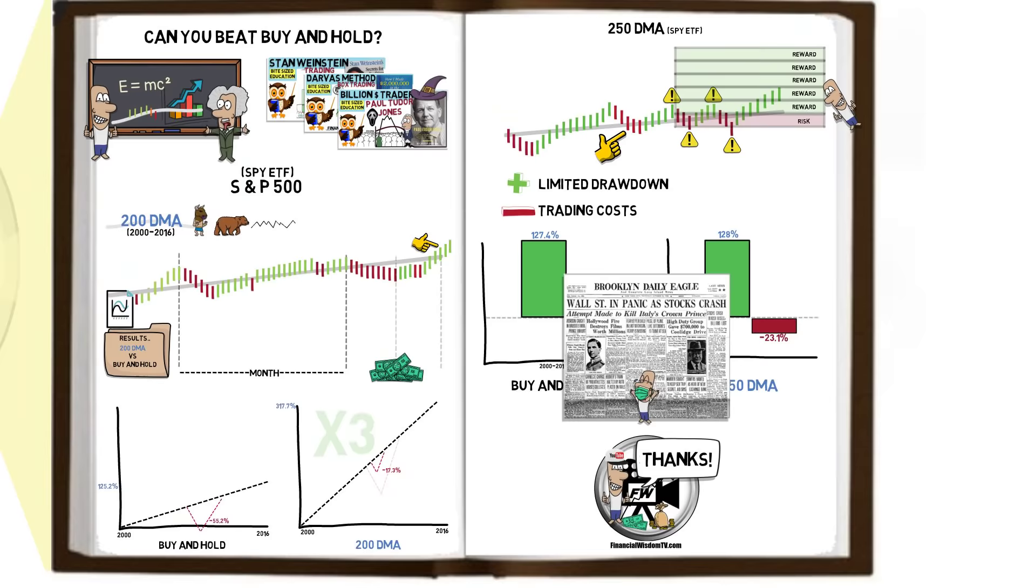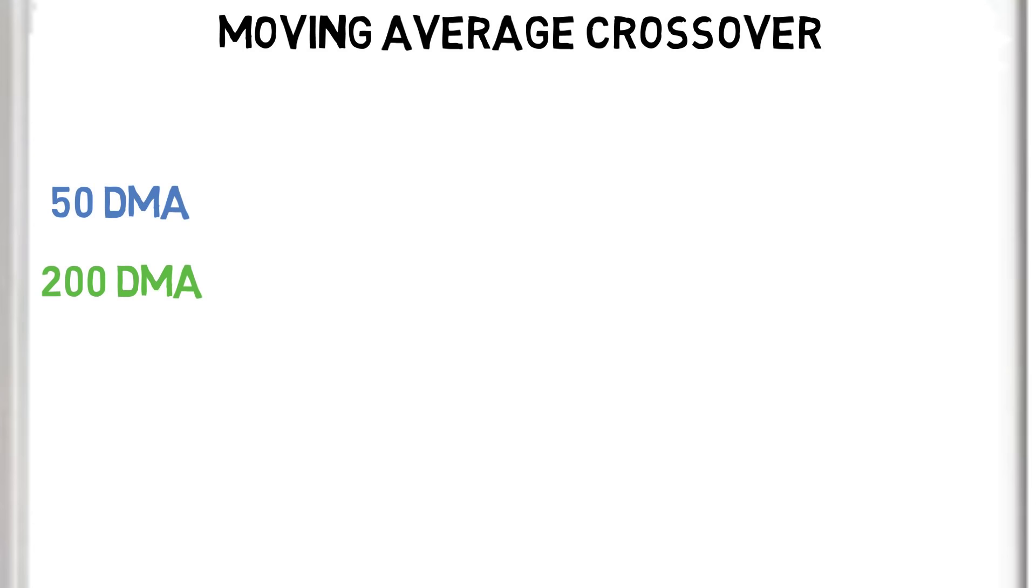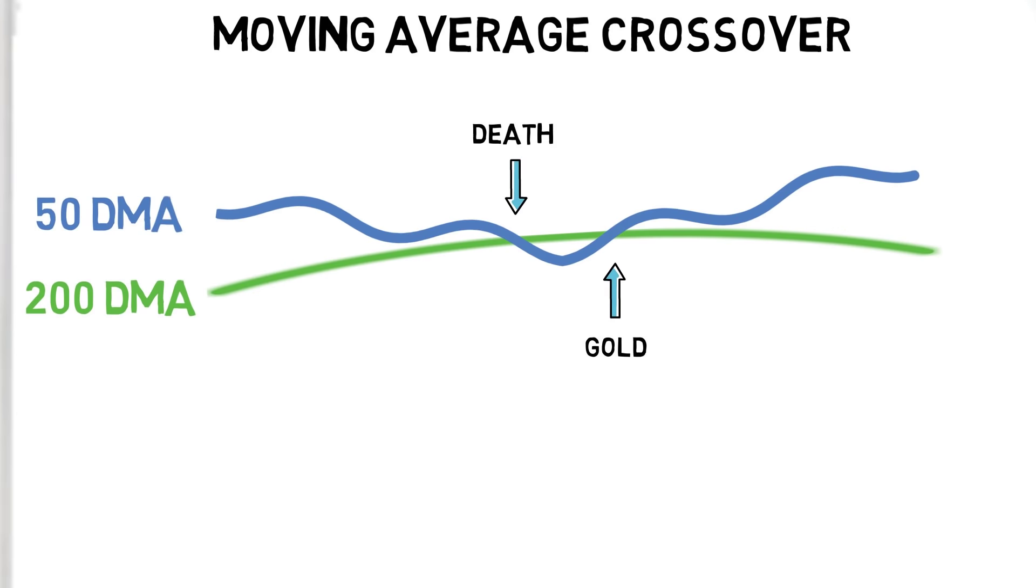Next we have a moving average crossover system, using the 50 day moving average and the 200 day moving average, also known as the gold and death crosses. The trigger to enter a position is determined by the direction of the crossover.